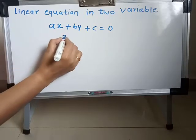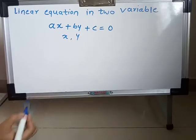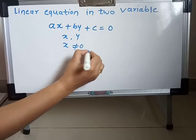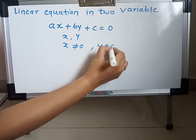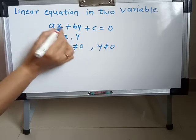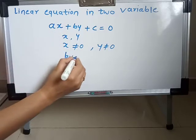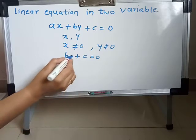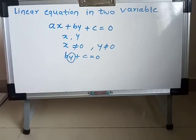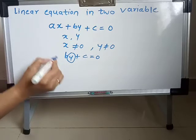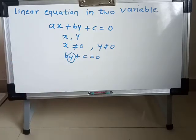There are two variables here — X and Y. X can't be 0 and Y can't be 0, because when X is 0, that term vanishes and our equation becomes BY plus C is equal to 0, which means it has only one variable. But our topic is linear equation in two variables, so we can't take X equal to 0 or Y equal to 0.